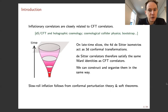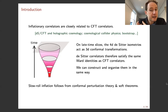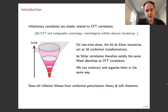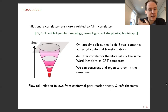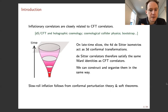That means de Sitter correlation functions on late-time slices have to obey exactly the same set of constraints as conformal field theory correlators — these are the conformal Ward identities. So in fact you can construct and organise cosmological correlators in exactly the same way as you would for CFT correlators. If you want to understand slow roll inflation, where the geometry is close to de Sitter but not quite, there's a whole host of tools available from conformal field theory: conformal perturbation theory and soft theorems.